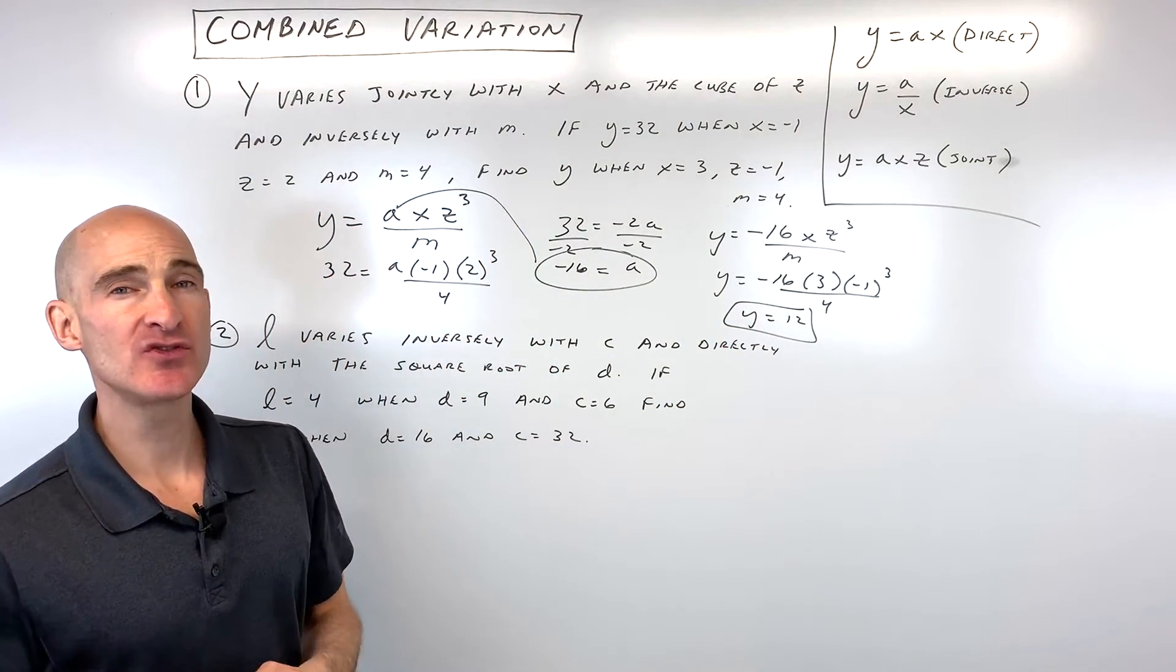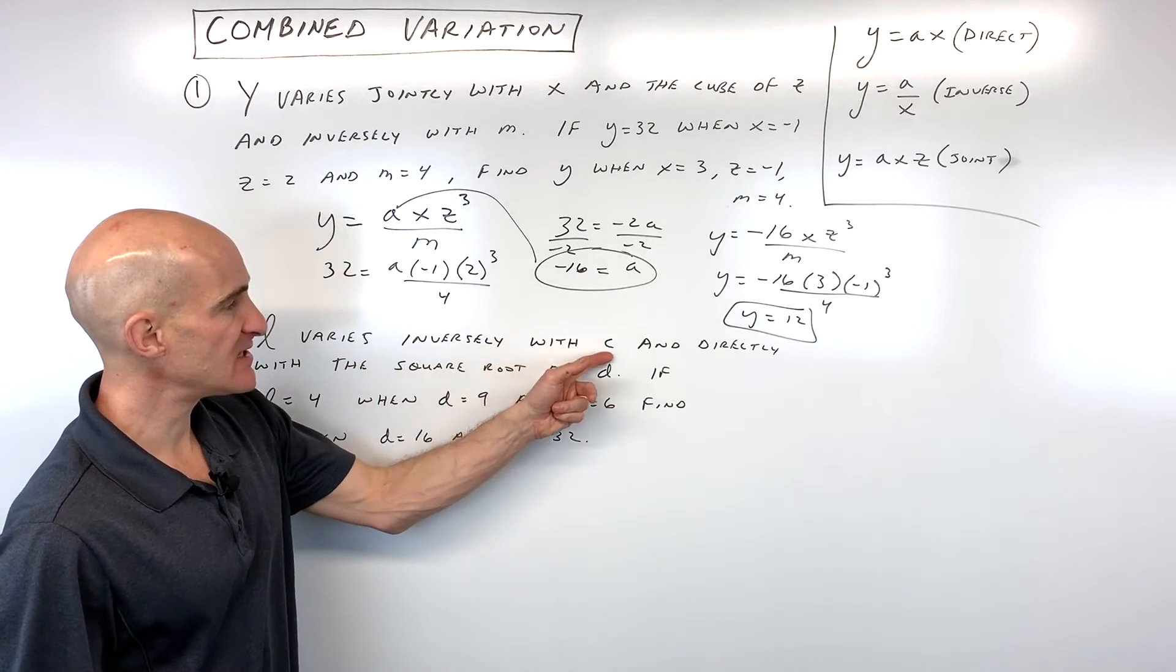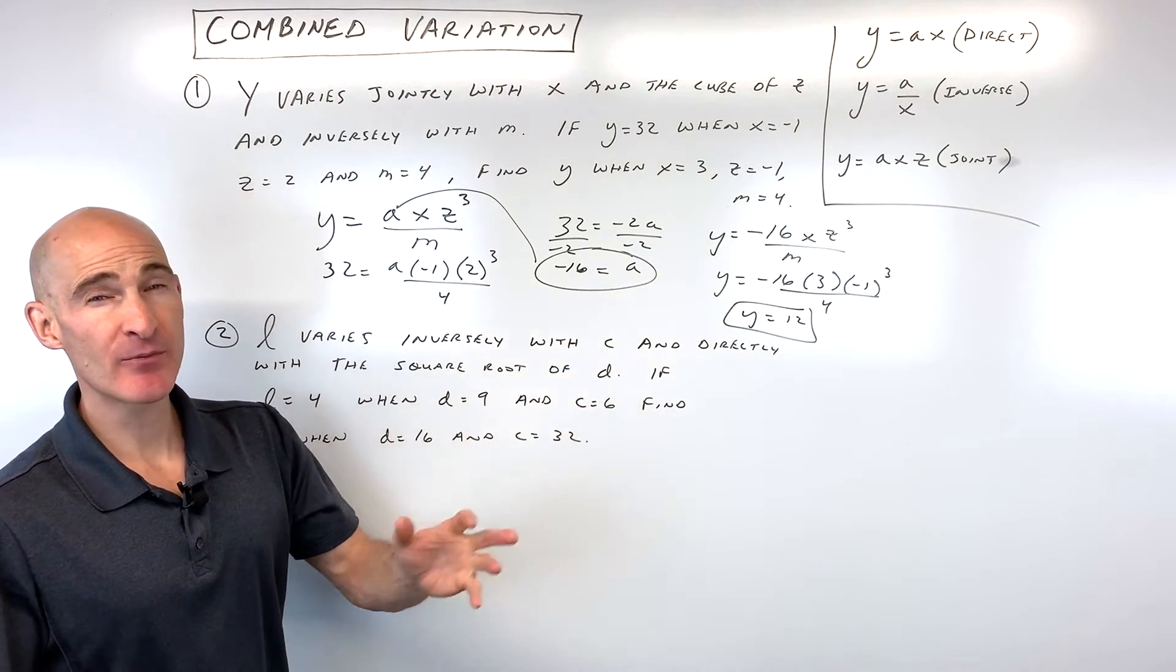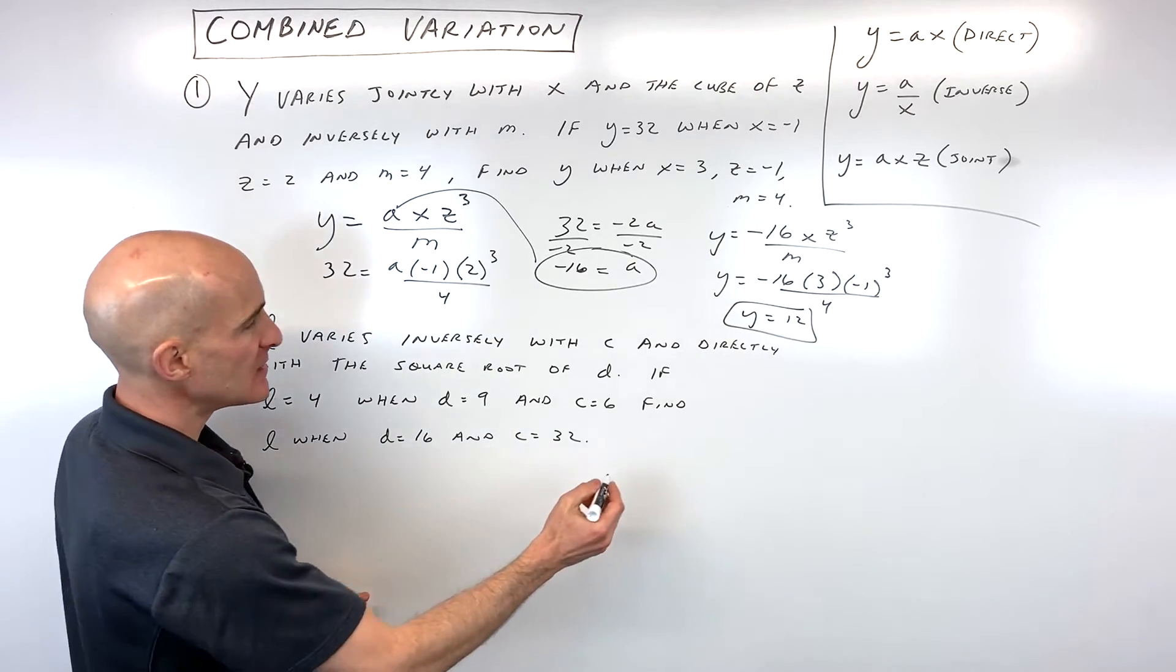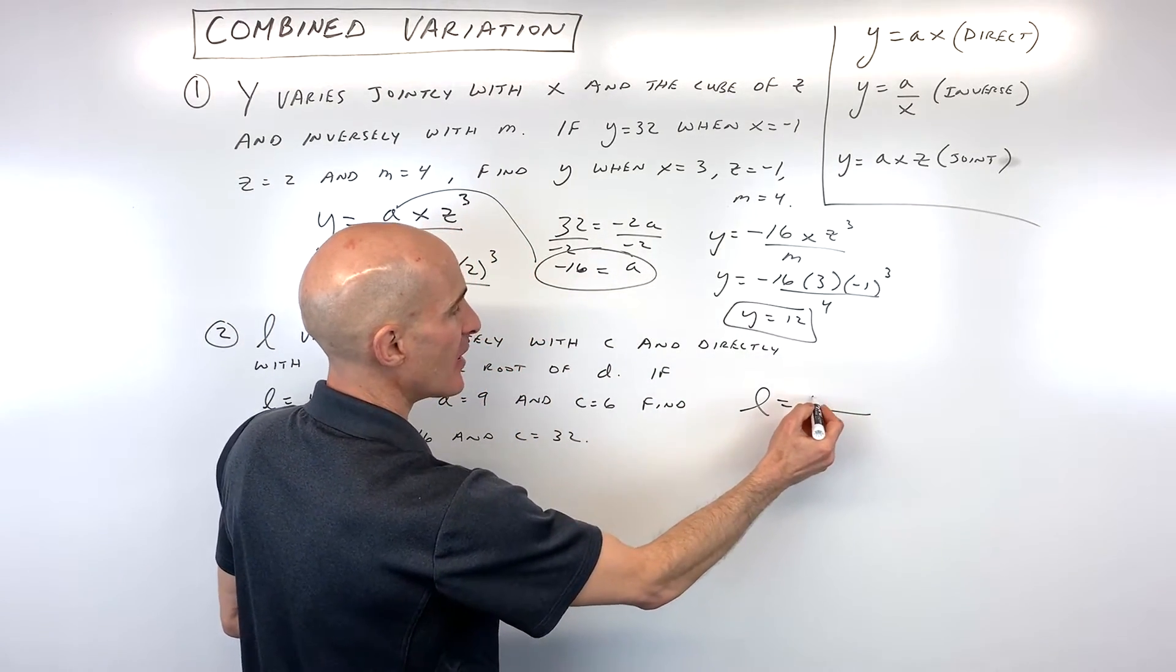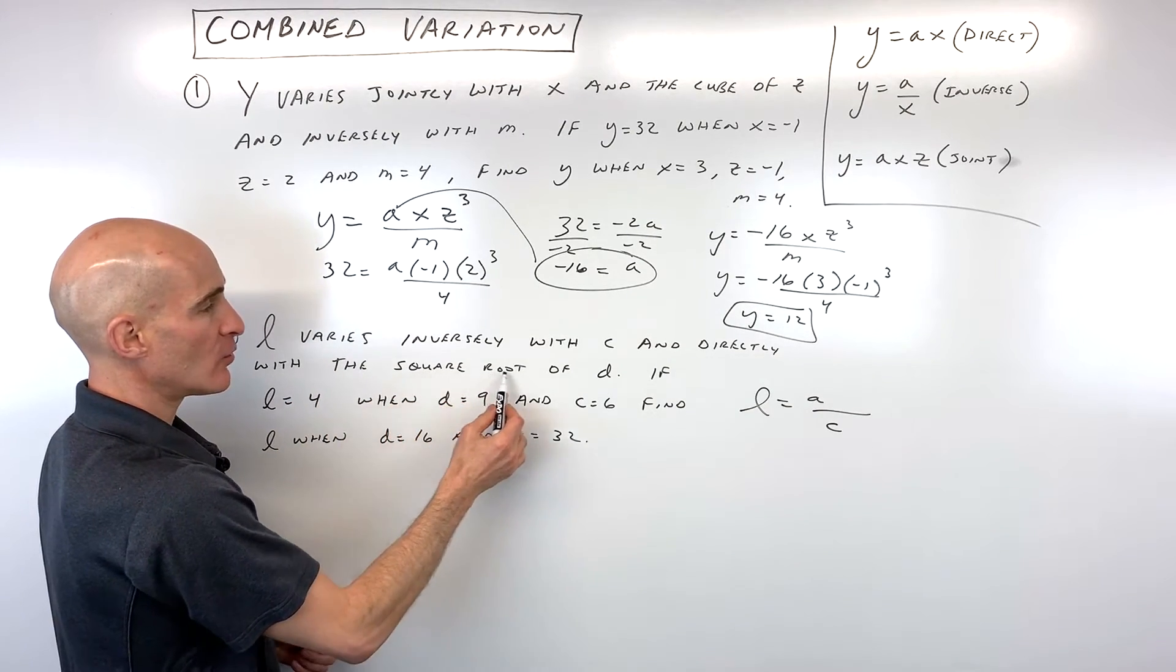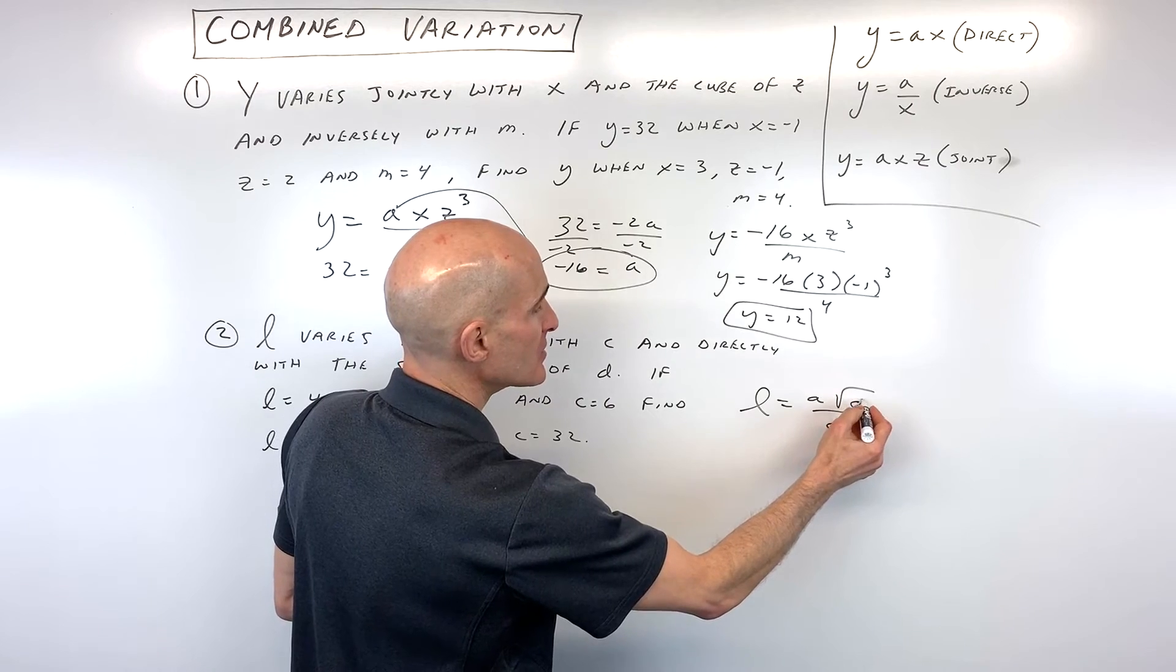Okay, let's do another example. See if you can do this one on your own. It says l varies inversely with c and directly with the square root of d. Okay, let's stop right there for a moment. So how would you write that equation? Well, let's see, we've got l varies inversely with c. So that means that's gonna go in the denominator, the c value. We have our constant of variation a, and directly with the square root of d. So directly, that's gonna be in the numerator, square root of d.